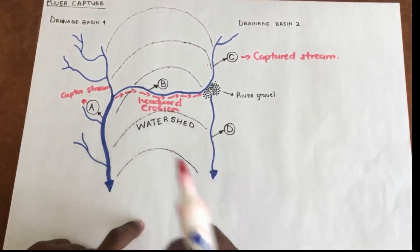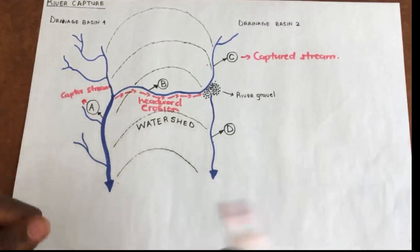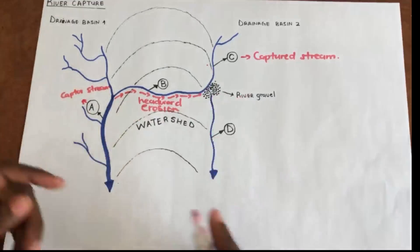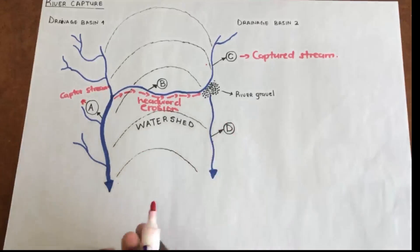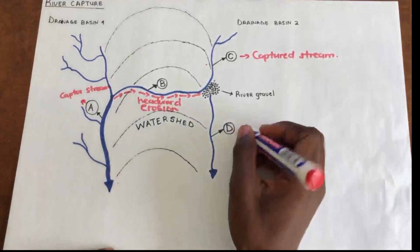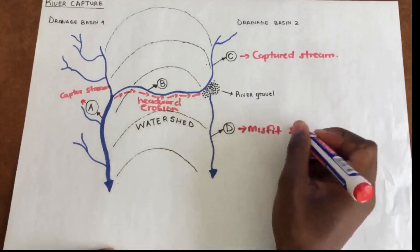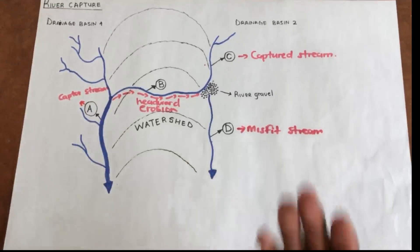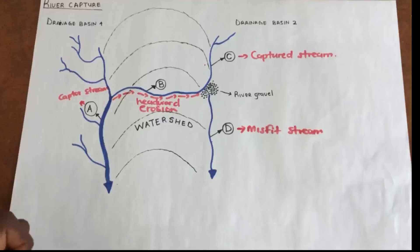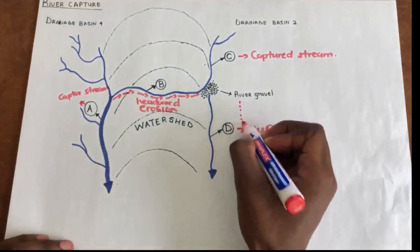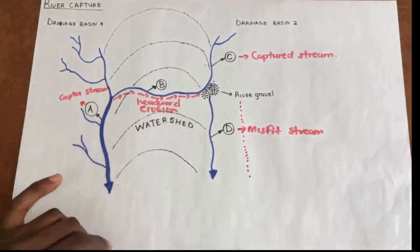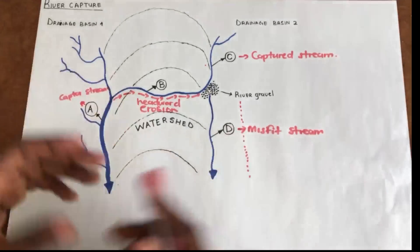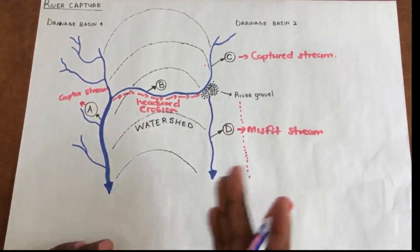Stream D is now going to lose water — there is a loss of water and it will become a dry stream. We call this a misfit stream. This misfit stream becomes a non-perennial river, also called an intermittent stream. On maps, a non-perennial stream is drawn with a dashed line. It is a very dry stream — water may only flow during the rainy season. So stream D becomes a misfit stream.